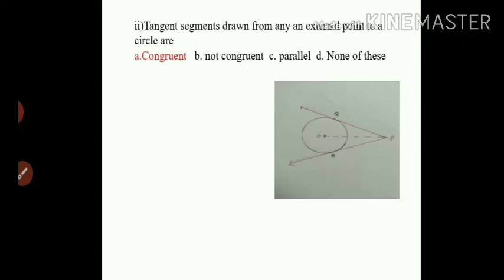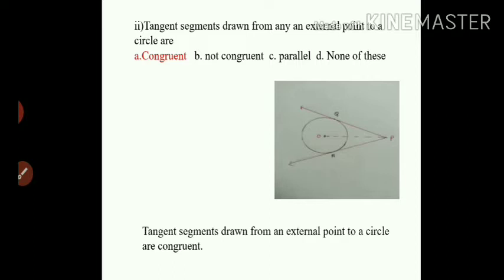Sub-question number 2: tangent segments drawn from any external point to the circle. In a circle with center O, point P is outside the circle, and from point P two segments PQ and PR are drawn as tangent segments from the external point. They will be congruent. The four options are: A) congruent, B) not congruent, C) parallel, D) none of these. So option A, congruent, is the correct option.